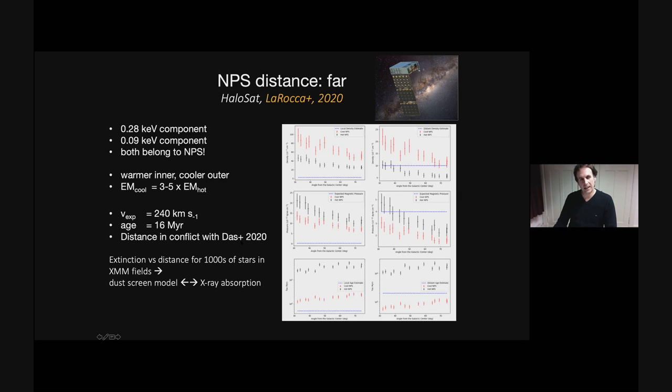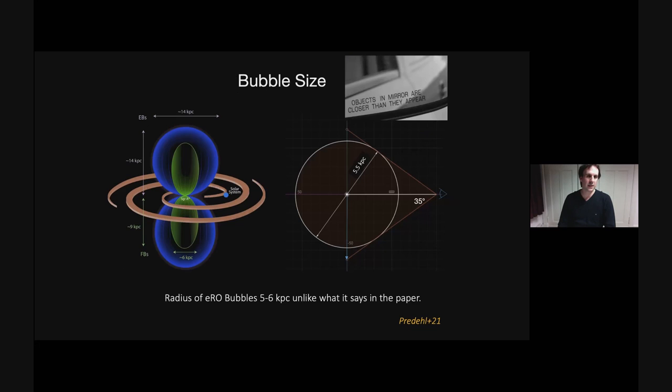And this is in conflict with the paper that was also just now pinned to the slack, which is a paper by Das and others. They looked at Gaia and other surveys and looked at essentially the extinctions of stars in the Northern polar spur. They looked at X-ray absorption and dust models, and they say that it's much closer. So I'm not the right person to weigh in on this dispute, but I put it out there and people can discuss it in depth. That's of course relevant.